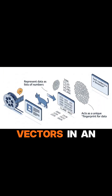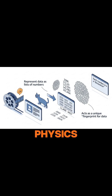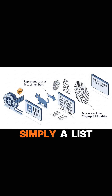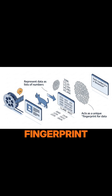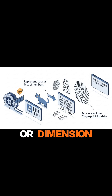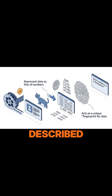So, what exactly are vectors in an AI context? Forget complex physics. In AI, a vector is simply a list of numbers that represents anything — a word, an image, a user's preferences, or a product feature. Think of it as a unique fingerprint for data. Each number in this list, or dimension, captures a different aspect of the item being described.